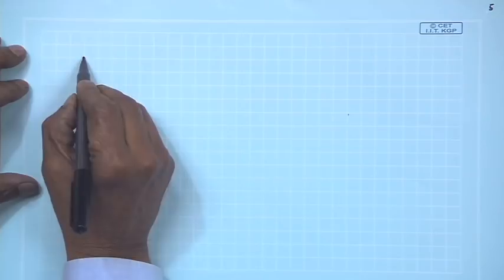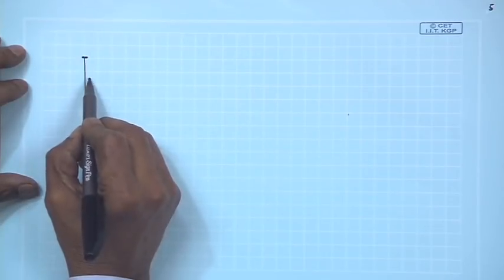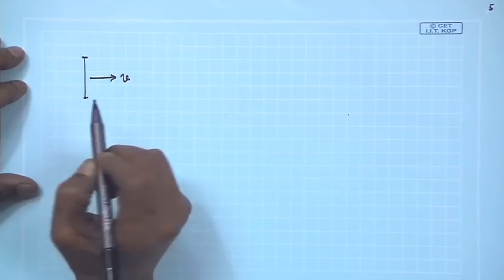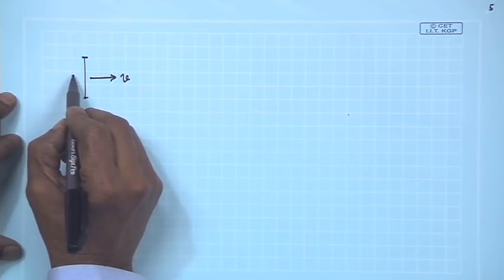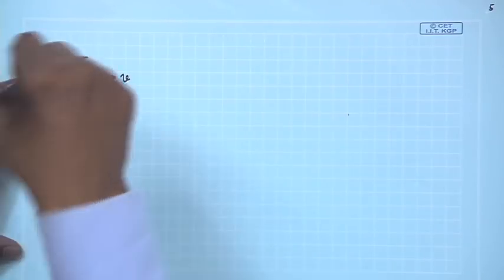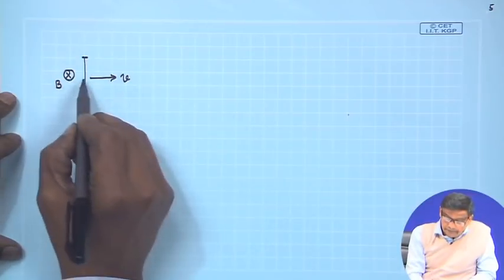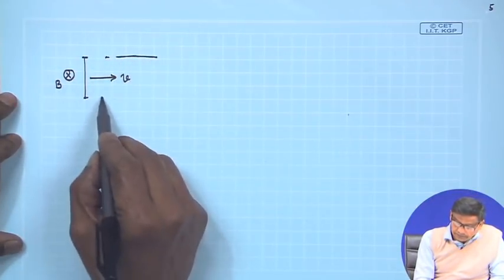Before that, I want to tell you one thing very clearly. These are the two rules which we will often be using. Suppose you have a straight conductor of finite length and it is moving with some velocity V, and let there be a magnetic field present all along the plane of the paper whose strength is B into the paper. The velocity is like this, and the length of the conductor is L.